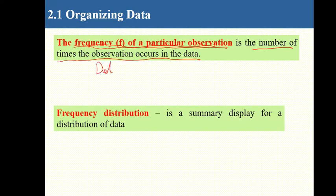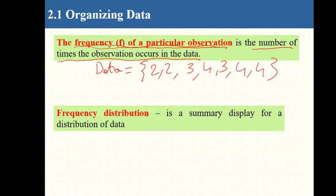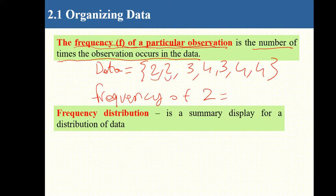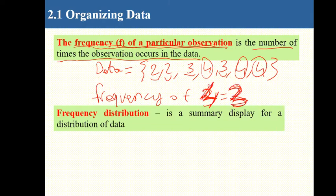For example, you collected data and got: 2, 2, 3, 3, 3, 4, 3, 4, 4. The frequency of 2 is 2 — how many times it's repeated. The frequency of 3 is counted as well. And the frequency of 4 is 3. Frequency means the counts — how many times each value appears.